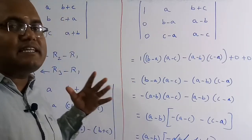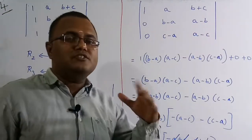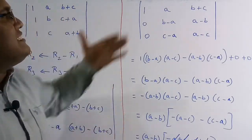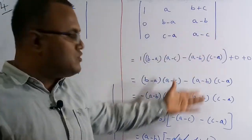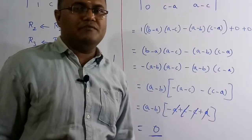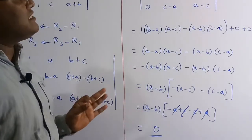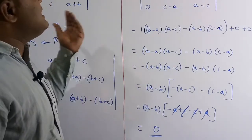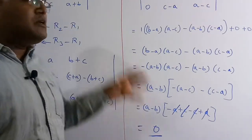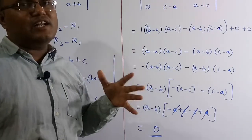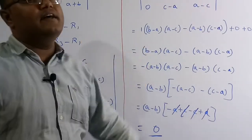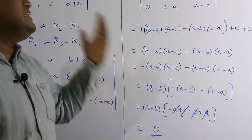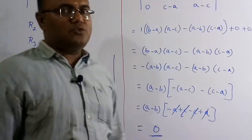The determinant is 0 because the row transformation does not change the value, and the result indicates one row is dependent on others — meaning the vectors are coplanar.